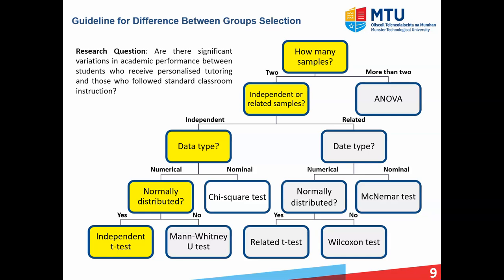Another research question: are there significant variations in academic performance between students who receive personalized tutoring and those who follow standard classroom instruction? We have two groups here — students with personalized tutoring and students with standard instruction — and these are independent groups because there's no one-to-one correspondence between them. It's numerical data based on scores, and assuming it is normally distributed, this brings us down to the independent t-test, where we compare the average score from one teaching method with the average score from the other.